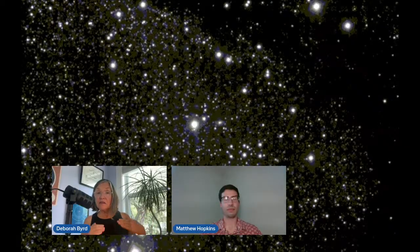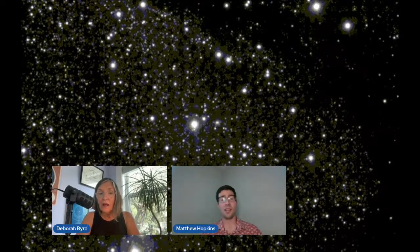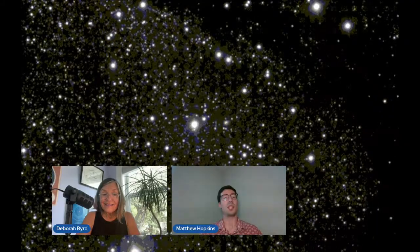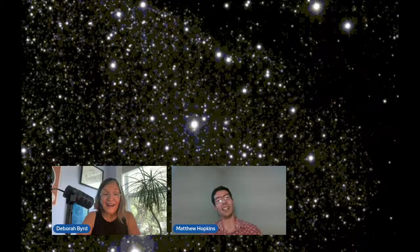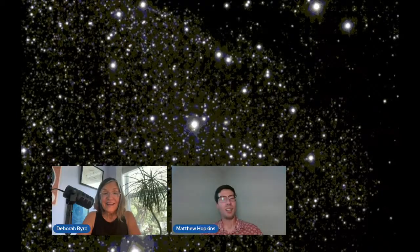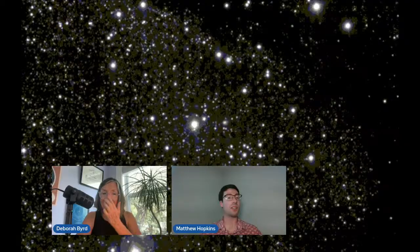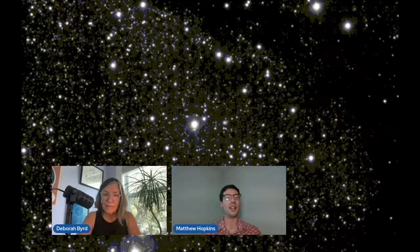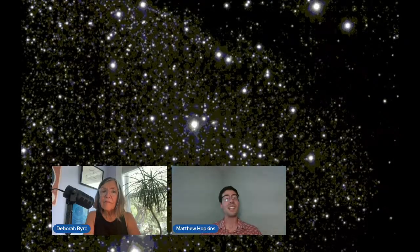Wow. And so your press release said that you analyzed the comet using a statistical method. Tell us about that. How did you study the comet? So I spent the last four years of my PhD predicting what the population of interstellar objects looks like, mainly looking at their velocities. We can tell a lot from just the velocity of an object because when we look at stars in the local area around the sun, there are correlations between their velocities and their other properties such as composition and, importantly for 3I, their age.